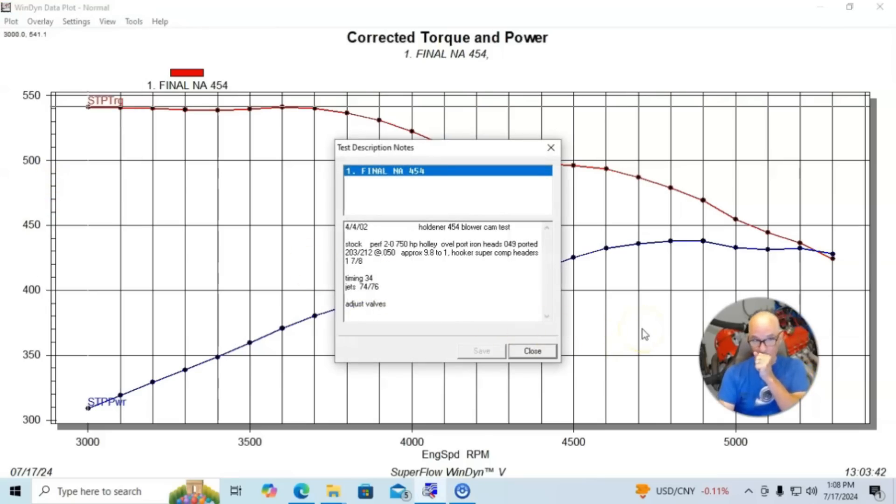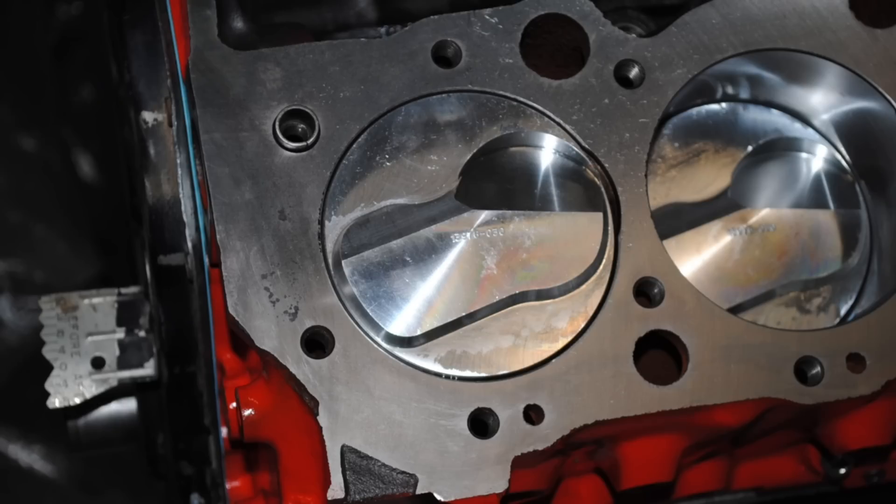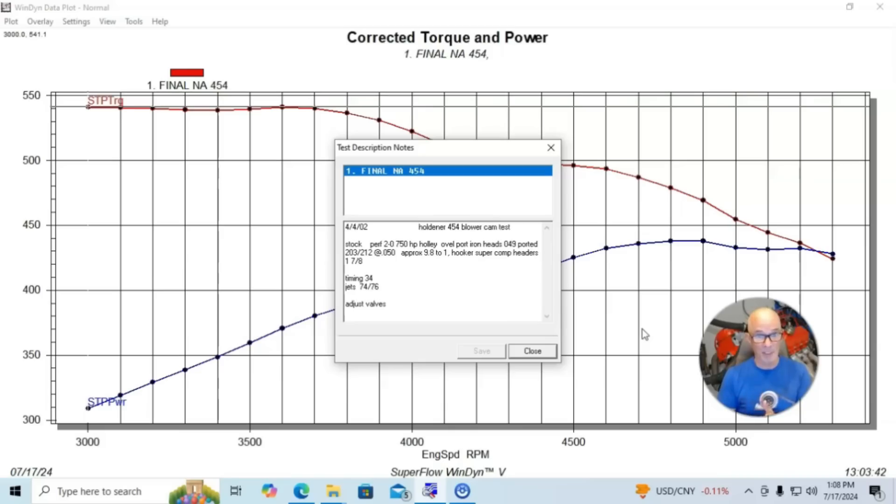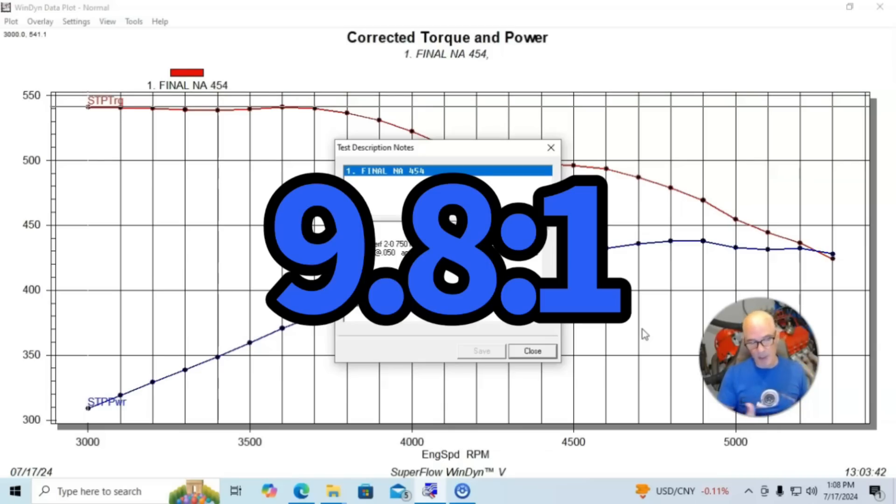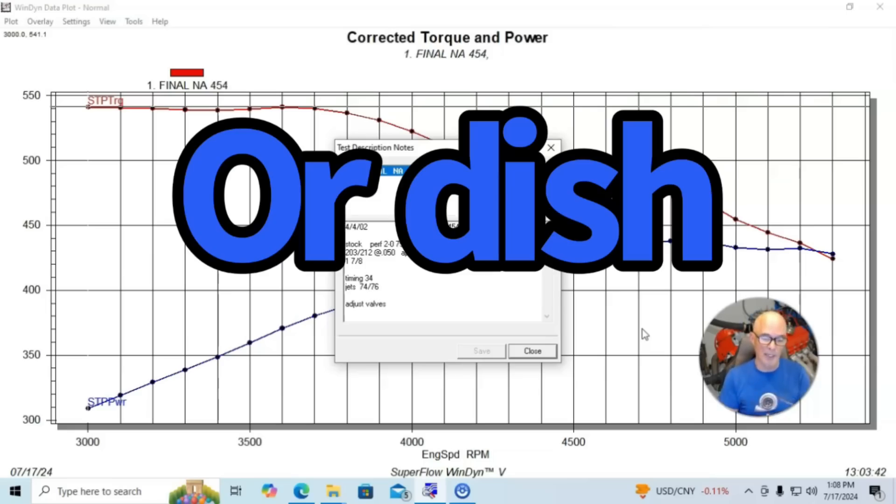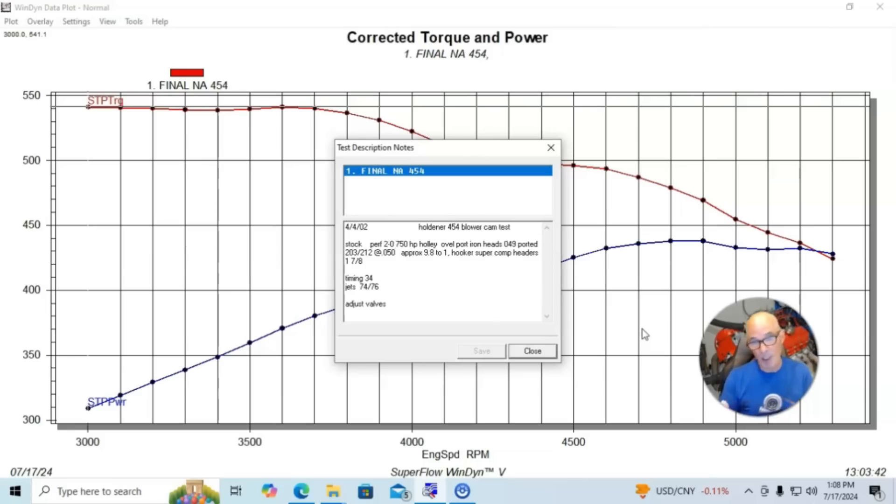We took the 454, we rebuilt it, and we put forged rods and pistons in it. I wanted to raise the static compression up a little bit because it originally had a flat-top piston, and we put a dome piston in it. So we got compression up to 9.7, 9.8 to 1, which was good.